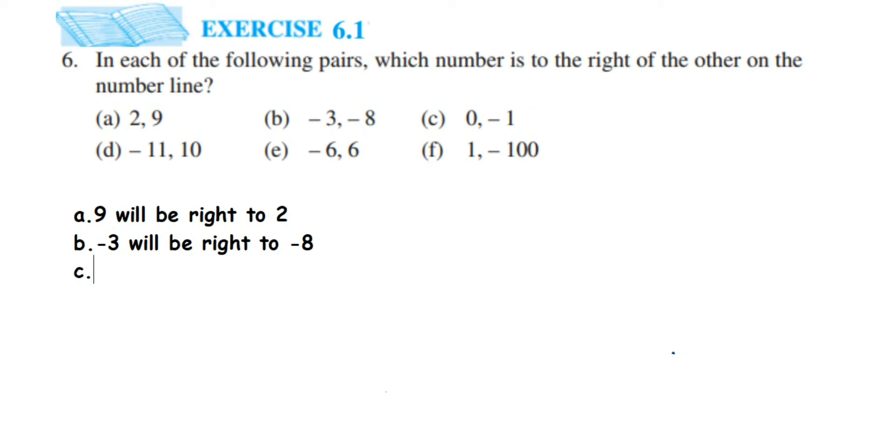Next is 0 and minus 1. When you compare 0 and minus 1, we know that negative integers are always smaller than positive. 0 doesn't have any sign, so let us consider it's greater than minus 1. Obviously, minus 1 comes to the left hand side of 0, so 0 will be on the right hand side of minus 1.